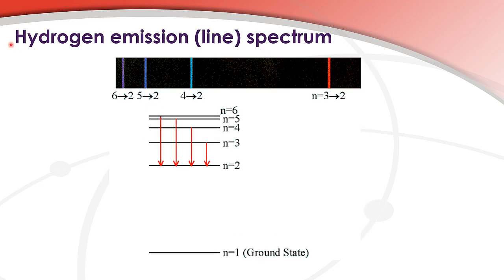Next we have the hydrogen emission line spectrum. It can be described as coloured lines on a black background. Here we have the energy levels of the hydrogen atom, starting with n equals 1, n equals 2, n equals 3, n equals 4, n equals 5, and n equals 6.